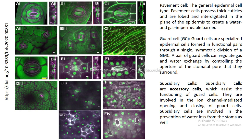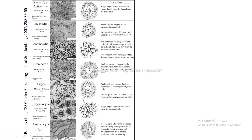So subsidiary cells are accessory to the guard cells and support and facilitate their functioning. Now let us discuss different types of stomatal complexes. Depending on the number and arrangement of the surrounding subsidiary cells, stomatal complexes can be of different types. This figure is taken from an article that explains different kinds of stomatal types.